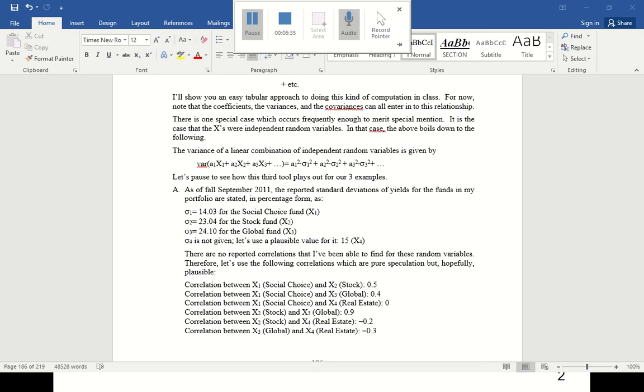This would be the covariance for this one would be 0.5 times the two standard deviations 14.03 and 23.04. This will be 0.4 for the covariance of 14.03 times 24.1. X1 and X3, that's nice because they get zero. So the covariance would be 0.9 times 23.04 times 24.1. And X2 and X4 will be negative 0.2 times 23.04.